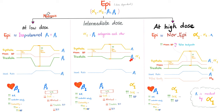We can use them in heart block or AV nodal block when the heart is very slow. We can use them as an adjunct to local anesthetics — epinephrine will vasoconstrict vessels, making the local anesthetic remain in that location longer, prolonging the effect of local anesthesia. We can use them if you have hypotension or shock — but epinephrine only, not norepinephrine. For anaphylactic shock, only epinephrine.